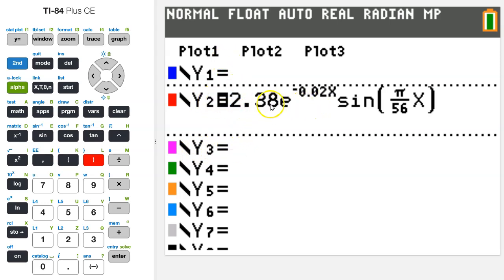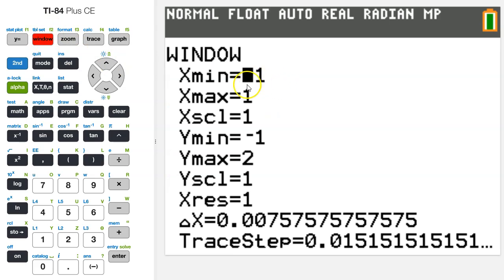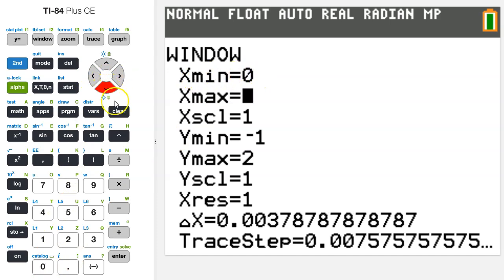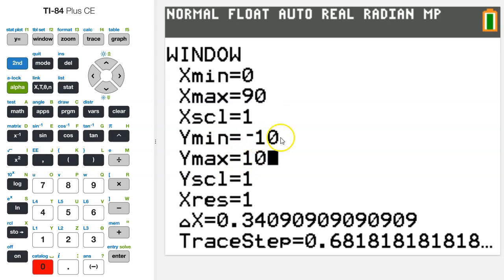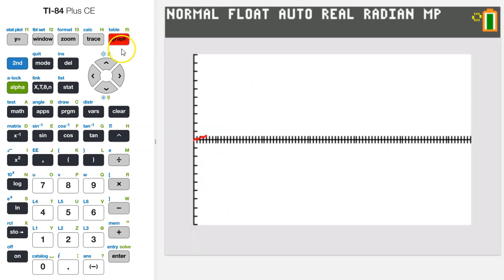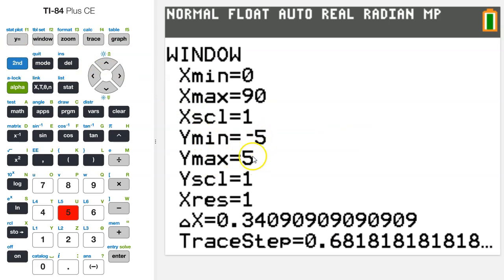We need to graph this on the interval from 0 to 90, so we need to adjust the window. Hit the window button, and we will let x min be 0, and we will let x max be 90. I'm not sure what y min and y max should be. By default, y min and y max are set to negative 10 and positive 10, so I'm just going to hit graph and take a look, and we can always adjust it later. I've changed y min to negative 5 and y max to 5.